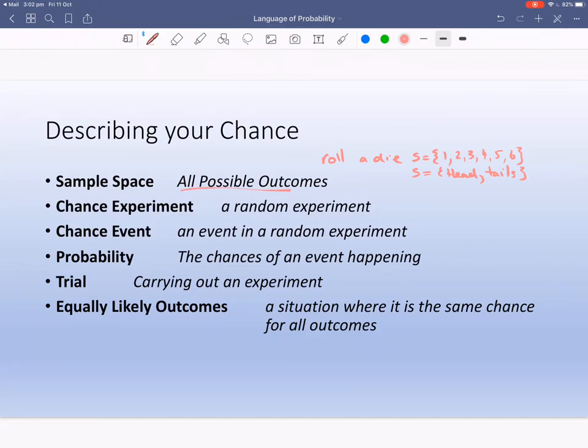So chance experiment is just a random experiment. For example, let's toss a coin. That's not how you spell coin. All right. So that's just a chance experiment. Let's toss a coin and see what comes up.